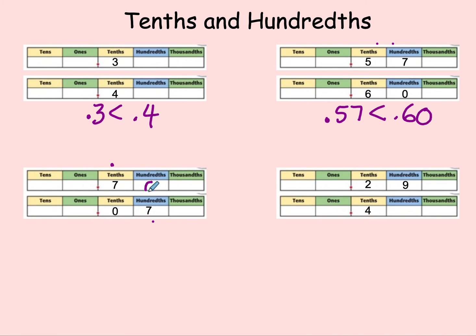We could have a zero here, so it is 70 hundredths and seven hundredths. So for that reason, seven tenths is greater than seven hundredths.